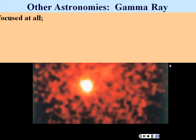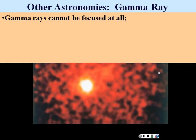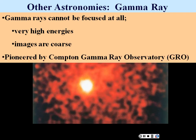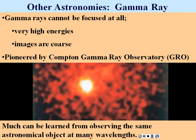For gamma ray astronomy: gamma rays cannot be focused at all — they are too high energy and are really comprised of particles. You can collect them and get a coarse sense of their magnitude, but cannot focus or image them finely. This type of observing was pioneered by the Compton Gamma Ray Observatory. Why collect gamma rays? Any different frequency or energy of light gives you different information about an object, so you learn more by looking at the whole spectrum.